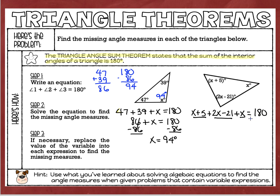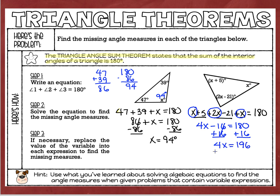From here, we're going to combine like terms. I've got x, a positive 2x, and another positive x: x plus 2x plus x is 4x. Then looking at my constants, I've got a positive 5 and a negative 21. Combining those gives me negative 16, so 4x minus 16 equals 180. To solve this two-step equation, I cancel the constant first by adding 16 to each side, giving me 196. Then I divide by 4, and we get x equals 49.